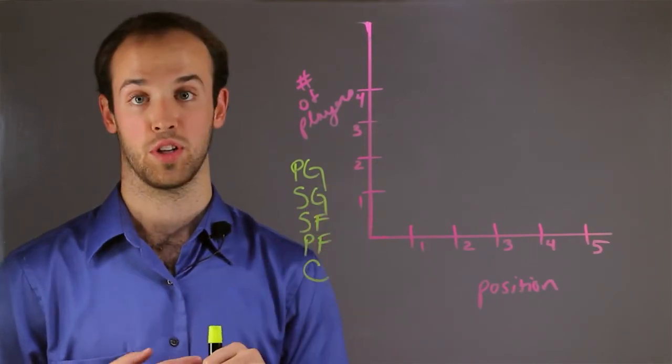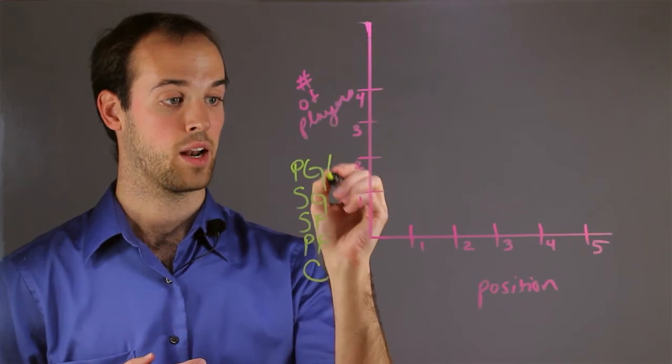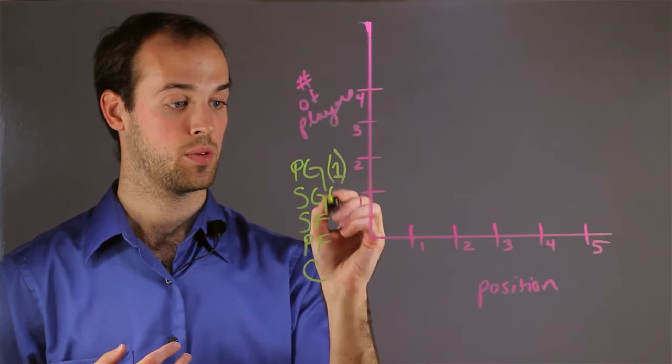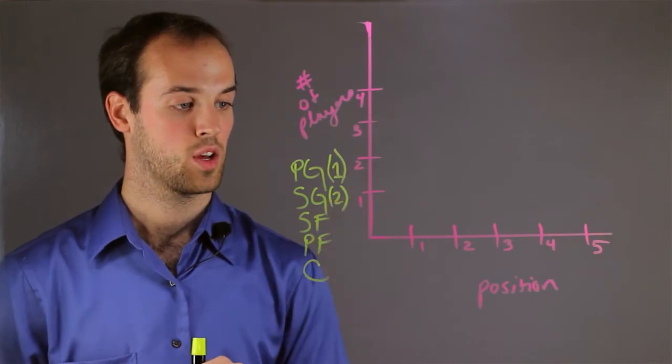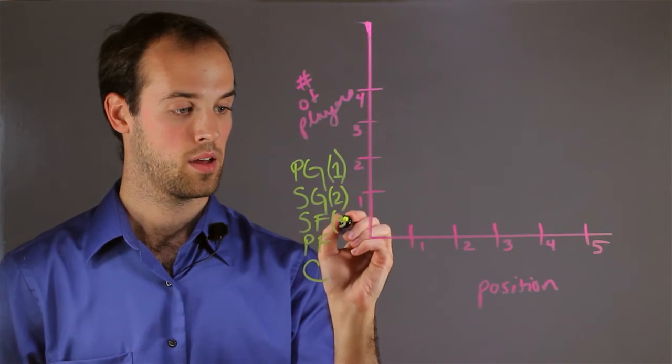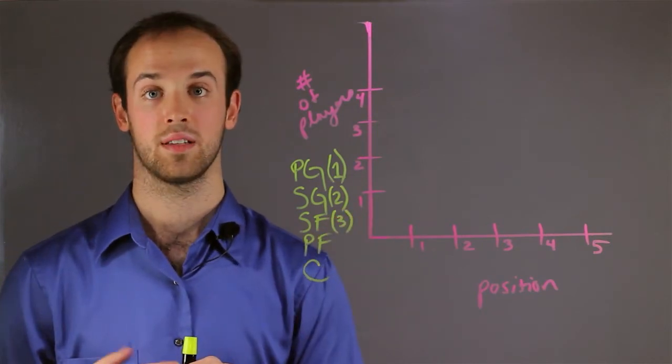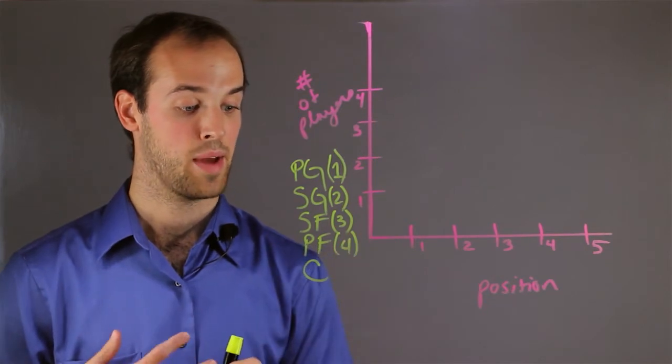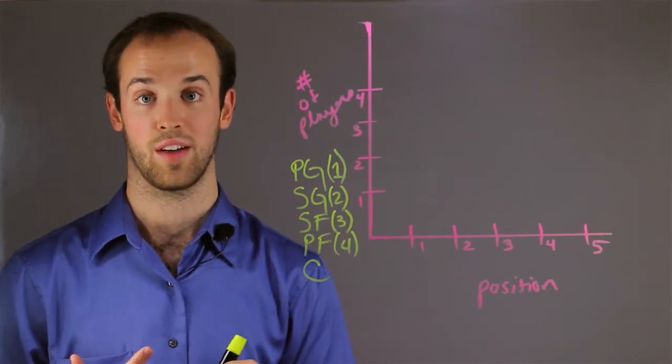Point guards are usually the smallest, so I will give that a number of 1. Shooting guards are next, so I'll give them a 2. Small forwards after that, I'll give them a 3. Then power forwards, a 4. And finally, my tallest and biggest players are usually centers, so I'll give them a 5.